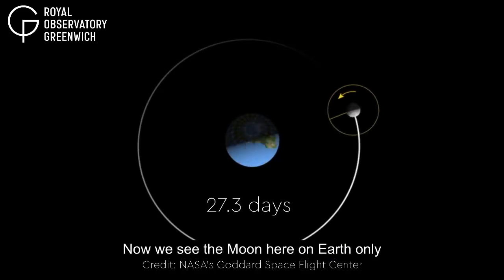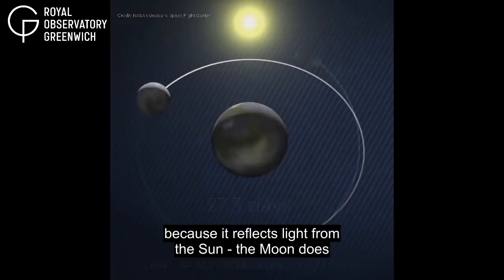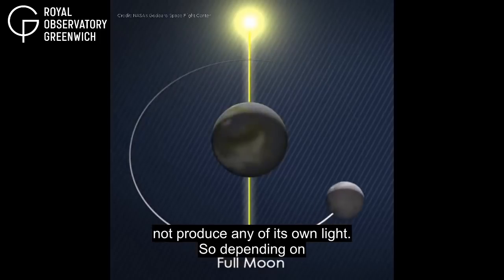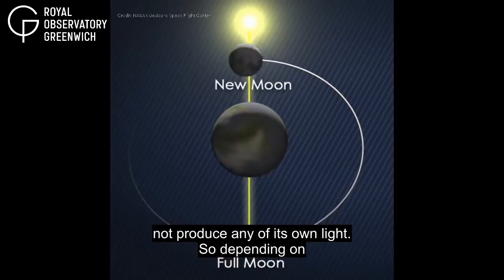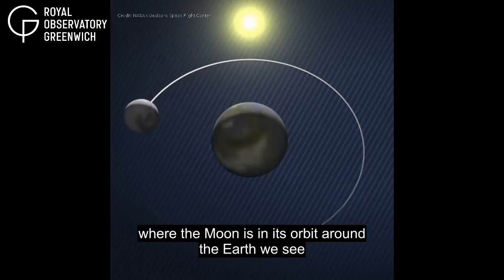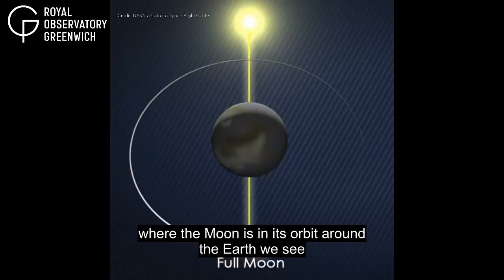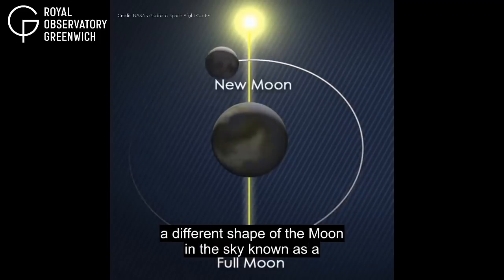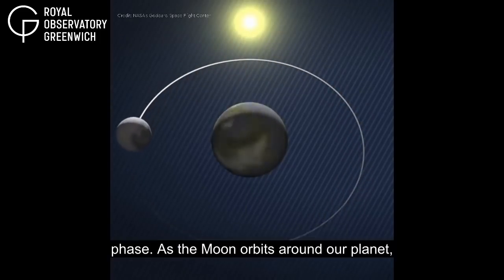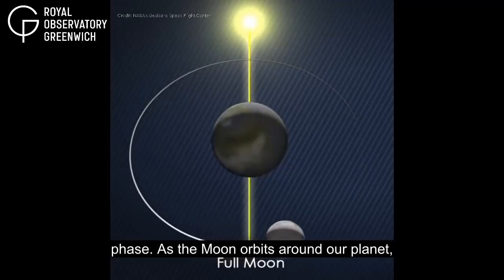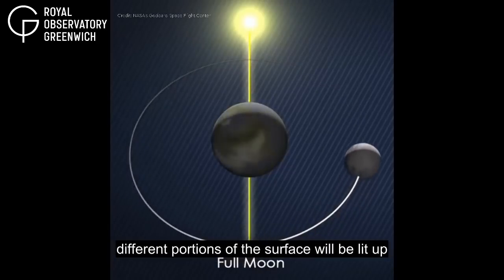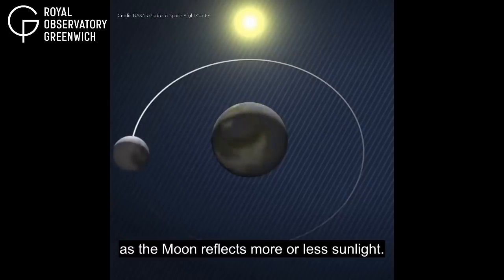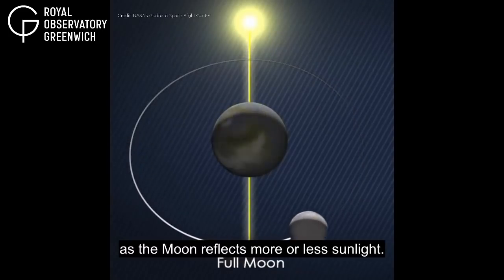We see the Moon here on Earth only because it reflects light from the Sun. The Moon does not produce any of its own light. So depending on where the Moon is in its orbit around the Earth, we see a different shape of the Moon in the sky, known as a phase. As the Moon orbits around our planet, different portions of the surface will be lit up as the Moon reflects more or less sunlight.